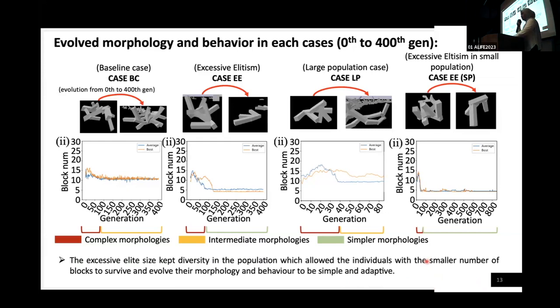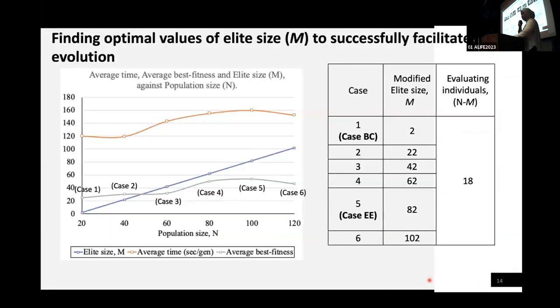Instead, our method of excessive elite size has kept the diversity in the population which allowed the individuals with smaller number of blocks to survive and to evolve their morphology and behavior to be more simple and adaptive. Finally, as observed from the previous result, we can see that evolution of creatures performs best in cases that we apply the EE method.